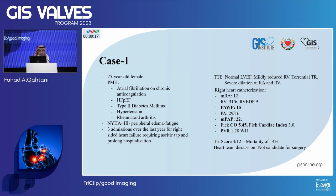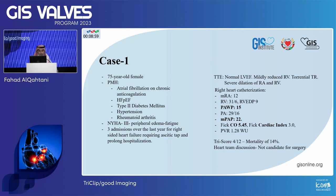She had transthoracic echo showing normal left ventricular ejection fraction, mildly reduced RV, torrential TR that was functional, and severe dilatation of the RA and RV. Right heart cath after diuresis showed mean RA of 12, RV systolic pressure of 31, PCWP of 15, and PA systolic pressure of 29. She had good cardiac output and cardiac index, favorable PVR less than 3 at 1.28. The TRI-score was 4 with in-hospital predicted mortality of 14%. Heart team discussion deemed her not a candidate for cardiac surgery and recommended a transcatheter option.